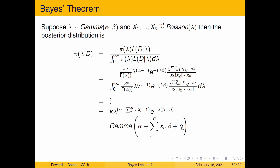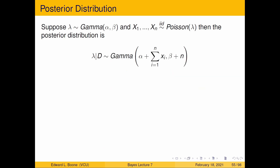If we stare at this expression, it's a gamma distribution where the first parameter is alpha plus the sum of the xi, and the second parameter is beta plus n. This is pretty easy to calculate — almost ridiculously easy. We'll use R to handle the gamma distribution function, but the pieces to plug in are straightforward.